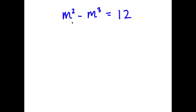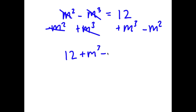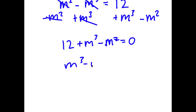So in this problem, I have m squared minus m to the power of 3 is equal to 12. To solve this, I'm going to first add m to the power of 3 on both sides and subtract m squared on both sides. These two cancel out, and now I have 12 plus m to the power of 3 minus m squared is equal to 0. I'm going to rewrite this as m to the power of 3 minus m squared plus 12 is equal to 0.